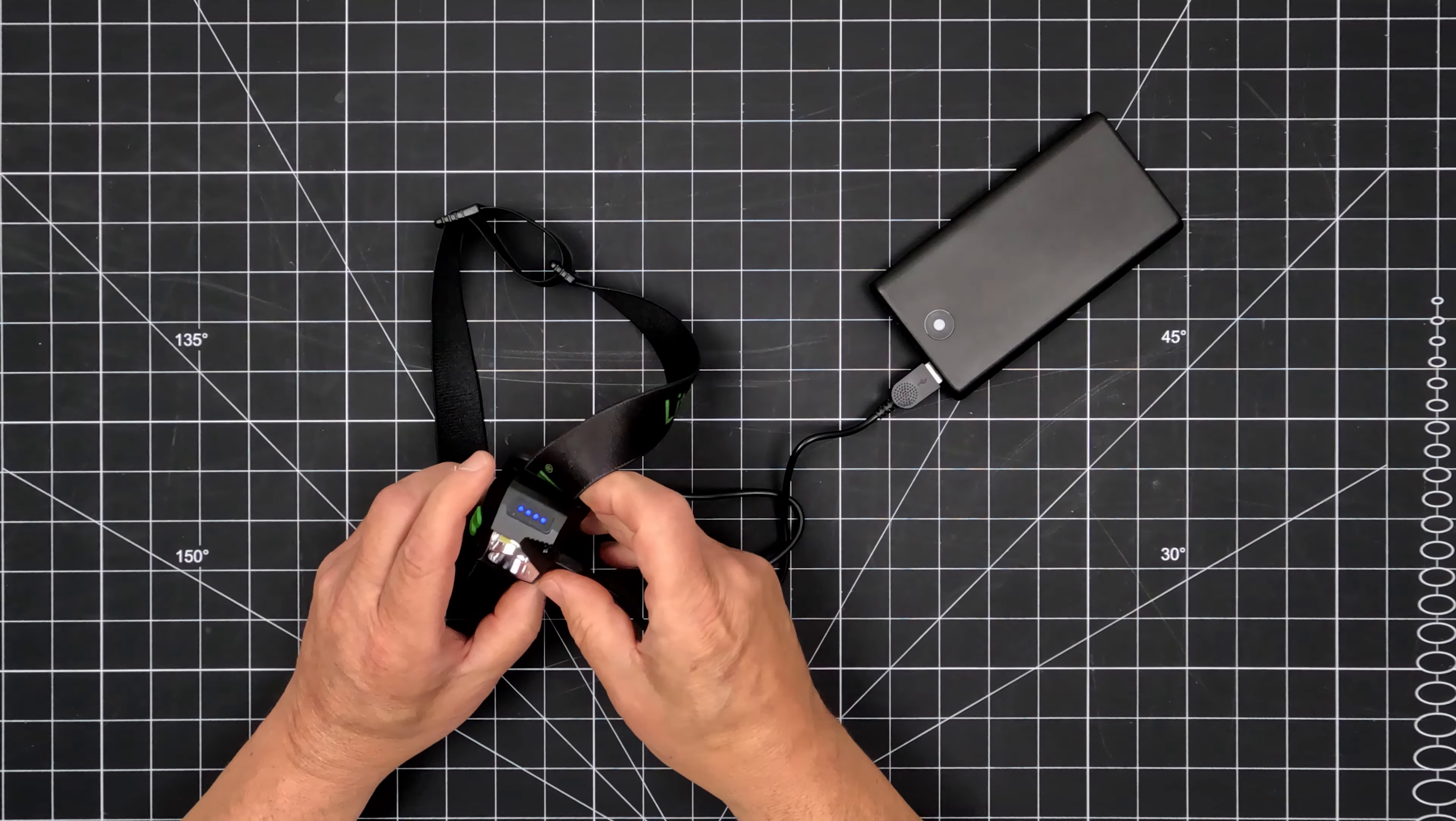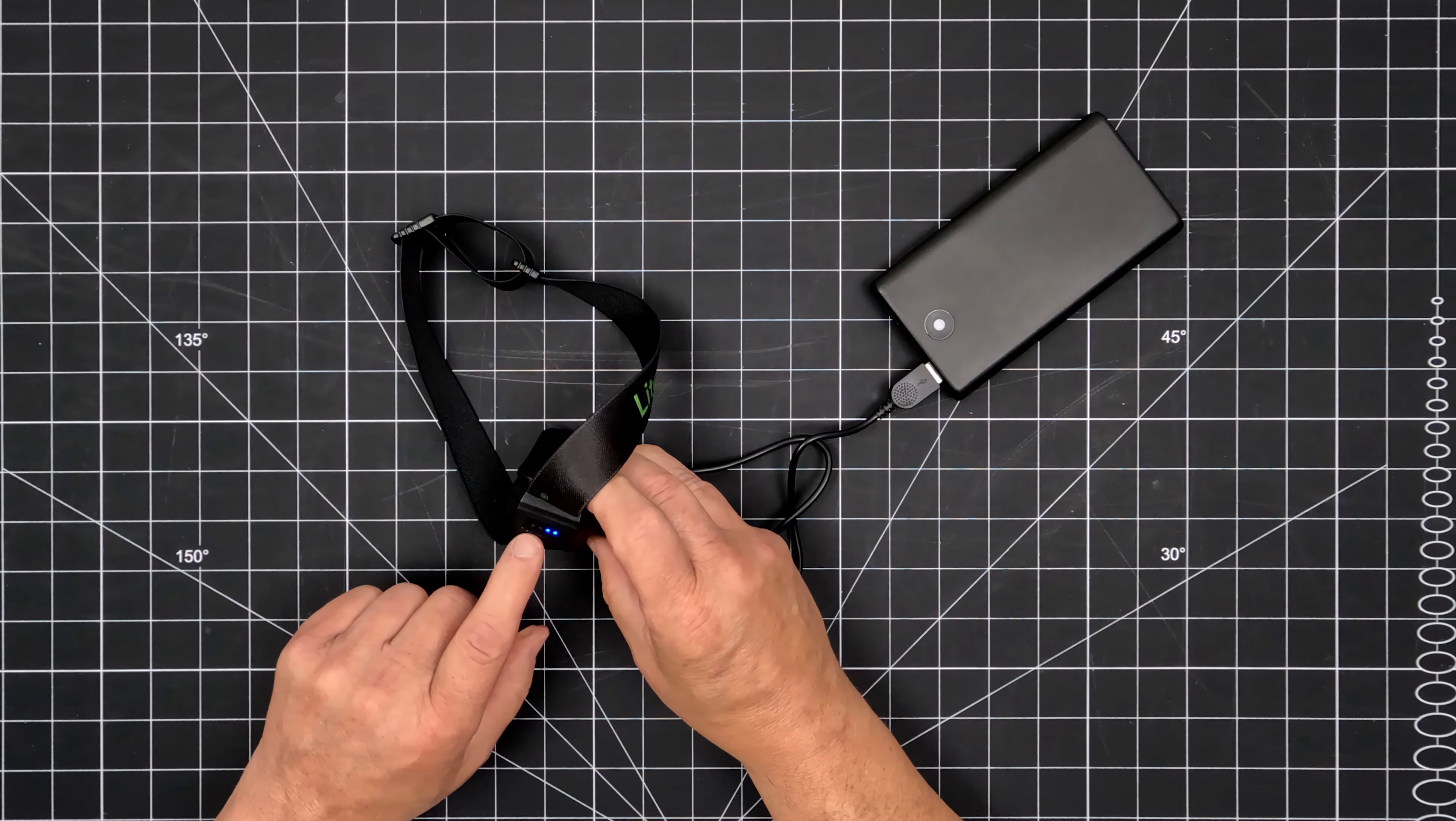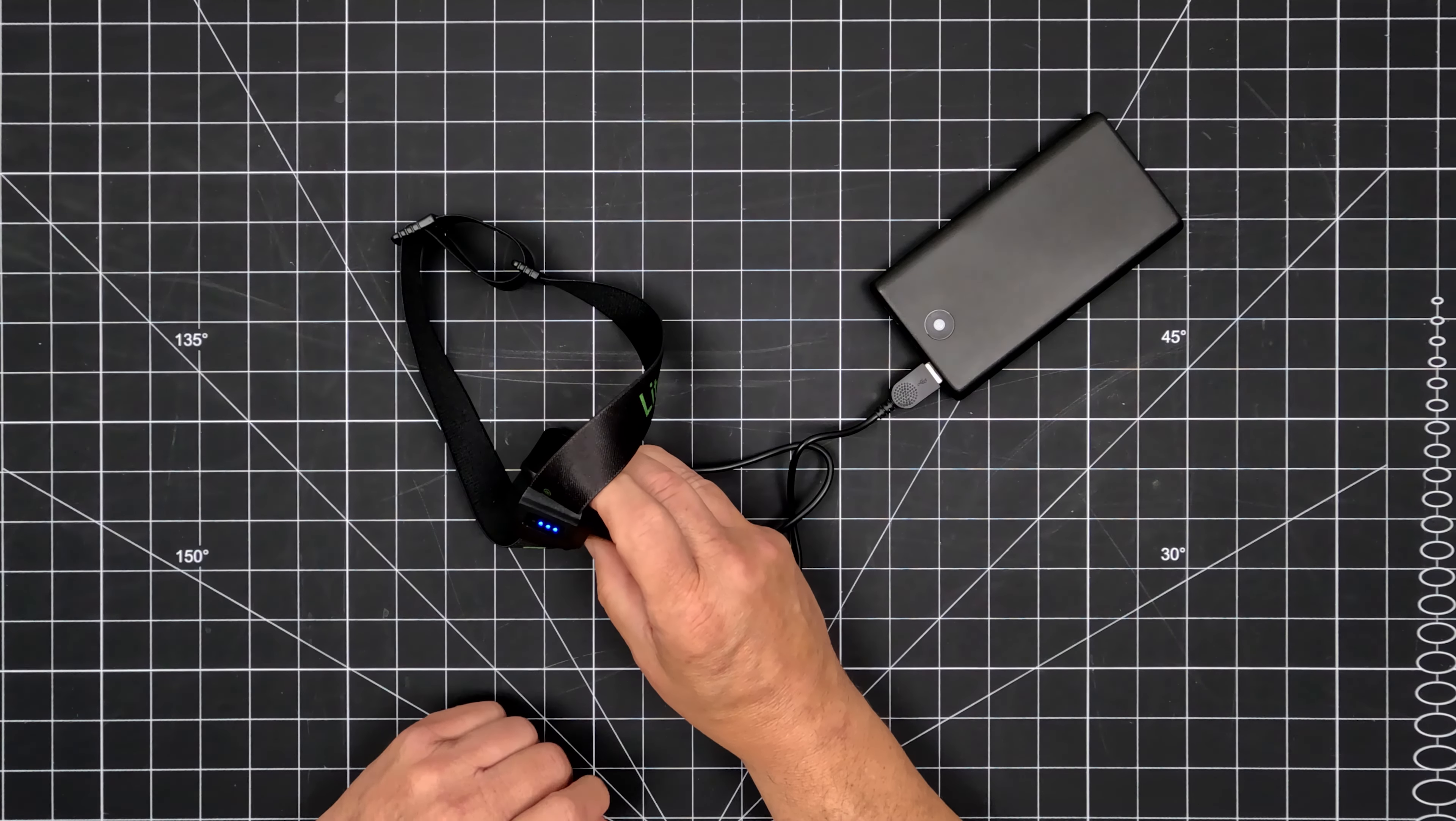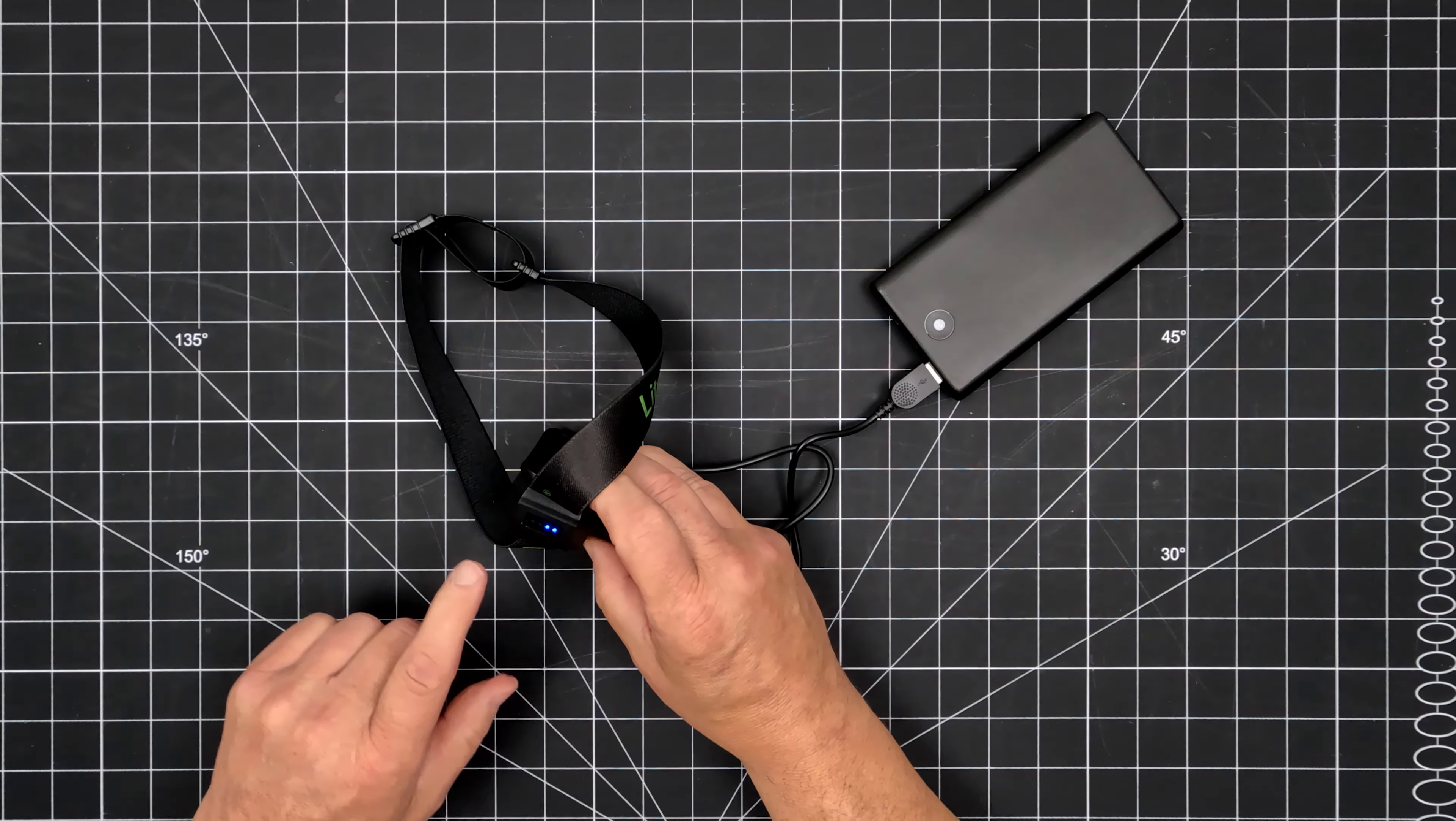A four-step charging indicator blinks while charging is in progress. All four lights turn solid blue when charging is complete. The charging lights also function as a battery life indicator while the headlamp is in use.